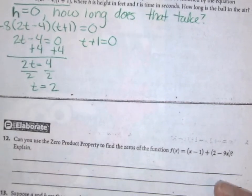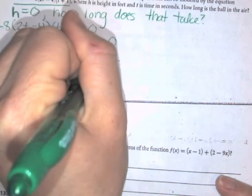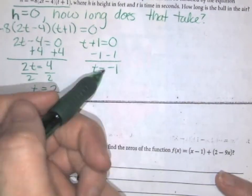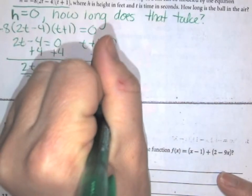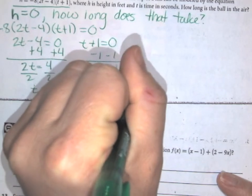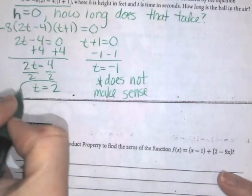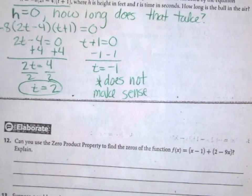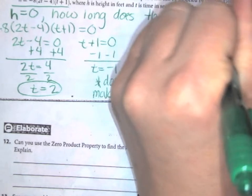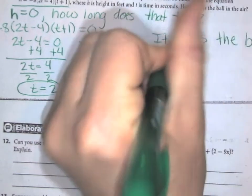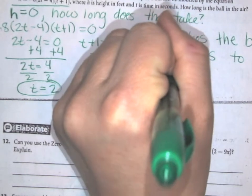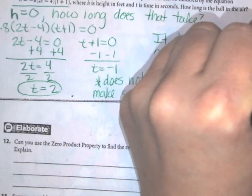t = 2. Here I subtract and get t = -1. Now, if you recall, t is time. Time cannot be negative, so this does not make sense. You cannot have a negative amount of time. Therefore, this has to be our answer. So it takes the ball two seconds to reach the ground.